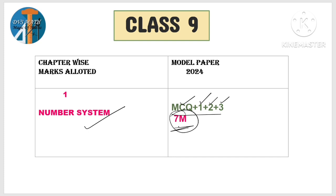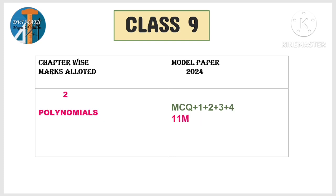This lesson — number system — is 7 marks. Coming to the second lesson: polynomials. This covers identities, division of polynomial, finding zeros of polynomial — complete portions. This is 11 marks weightage. Every mark type — MCQ 1 mark, 2 marks, 3 marks, 4 marks — so 11 marks weightage for polynomials. Concentrate fully on polynomials. Compared to others, surface area and volume is also made with high weightage.